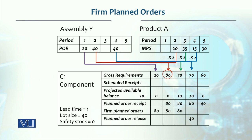Why do we need 70? Because we need 2 for A. And in the fifth week A, so 60 is 60. For C1, if we look at them, we have a fence after the third week. Even our planned receipt order is in the fourth week — after the fence. But because this order has been placed before the fence, it can also be changed. When the fence is placed in the front, we call it firm planned orders; after it, it is called planned order release.